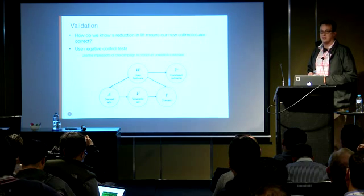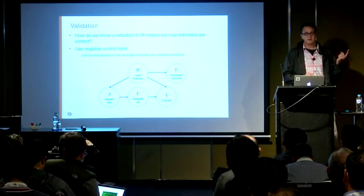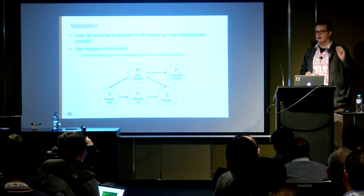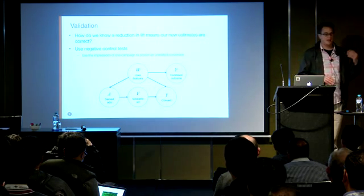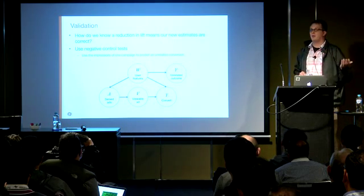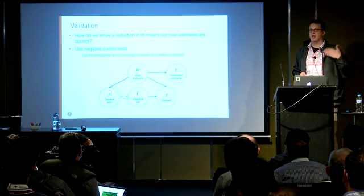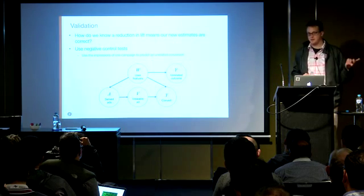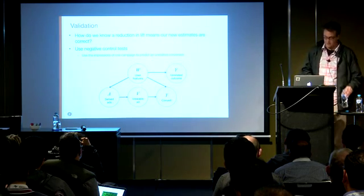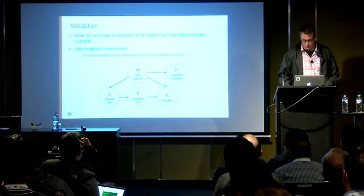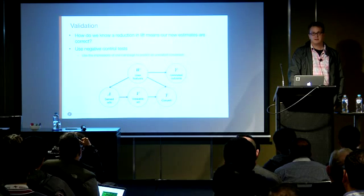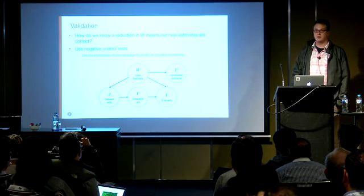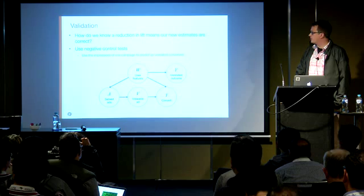A negative control is some irrelevant outcome that is, one, subject to the same confounders as your original system, but two, you know there's no causal effect of your ads on that outcome. For example, if you're running an advertising campaign for cars, monitoring whether users buy blue jeans should have no effect. So if you apply your analysis but use blue jeans as the outcome, you expect to get zero lift. If you don't see zero lift, it's an indicator for bias. What we did was, for each of our campaigns, select several other unrelated campaigns and use their conversions to test whether we actually get the expected zero lift.